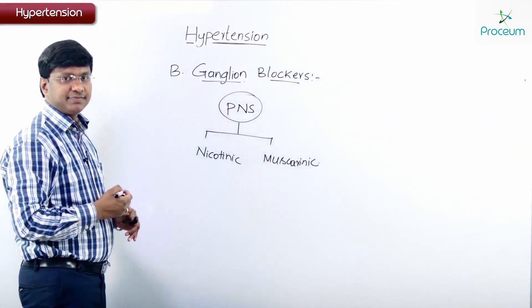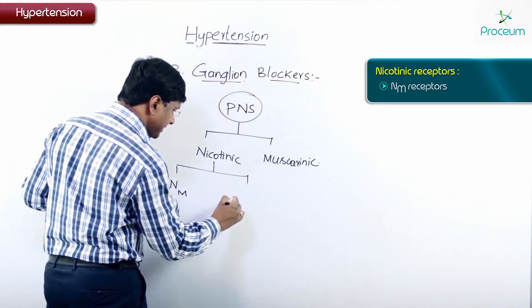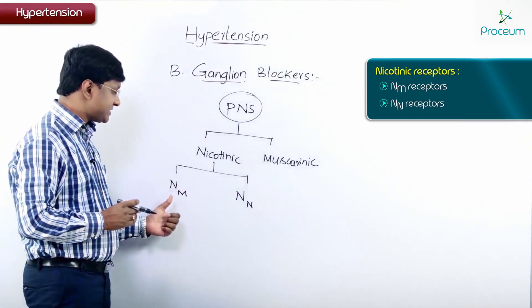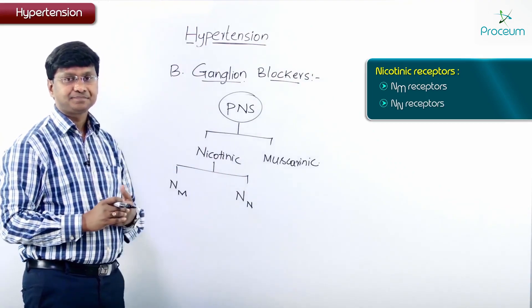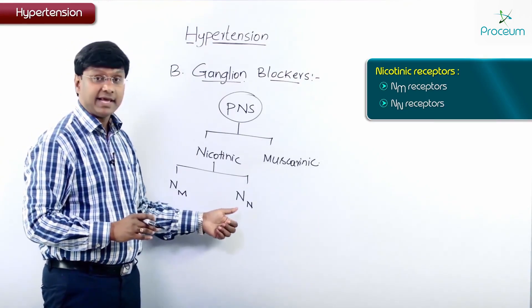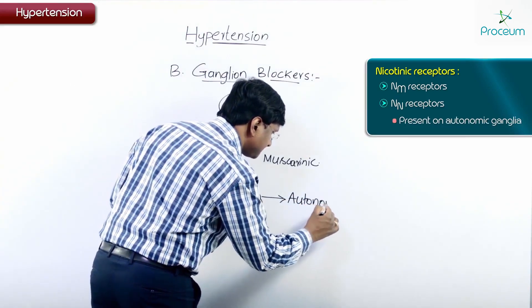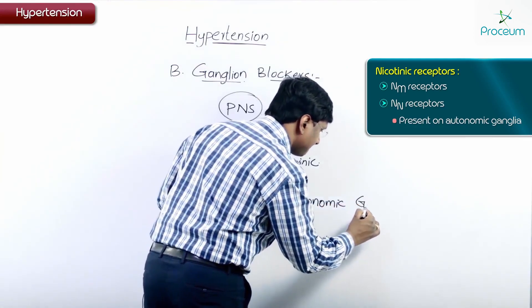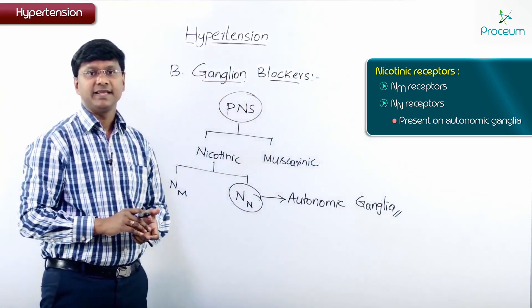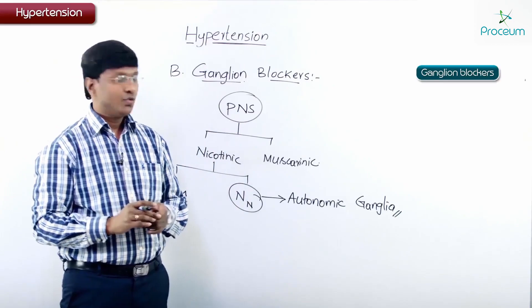Nicotinic receptors are of two types: NM and NN. Now, these NN receptors are present on the autonomic ganglia.